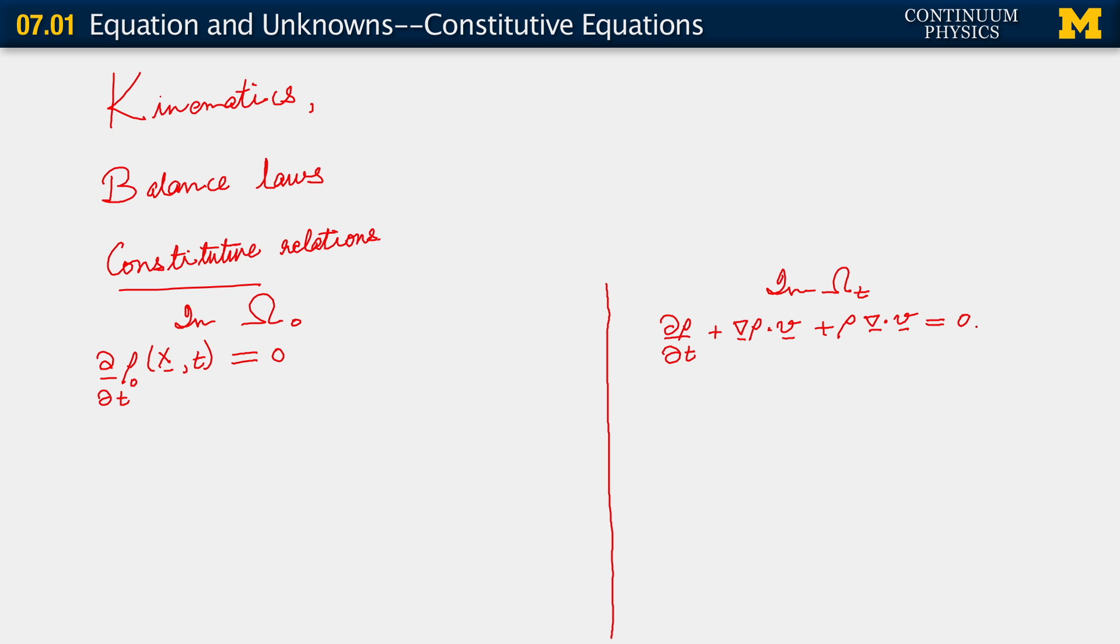The balance of mass in the current configuration takes on this form. Let me write it in its full form. We have the true partial time derivative plus gradient of rho dotted with the spatial velocity plus rho divergence of v equals 0.